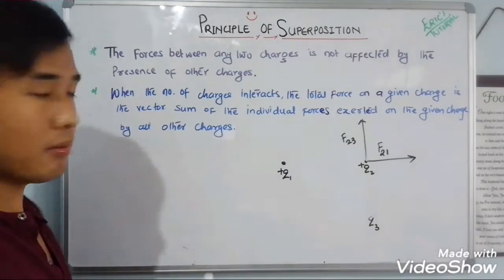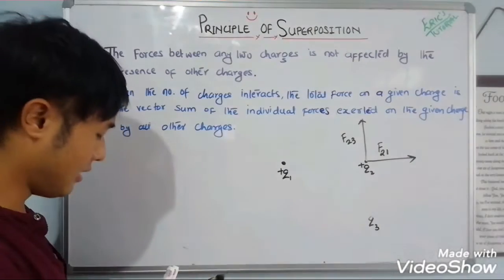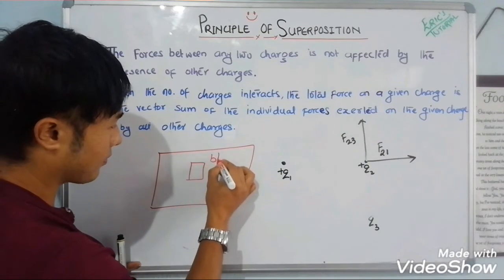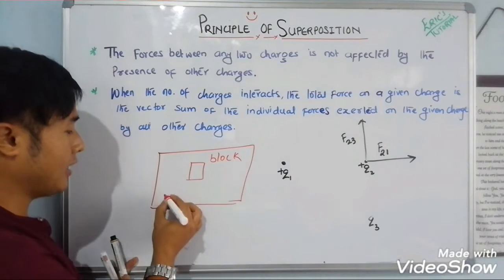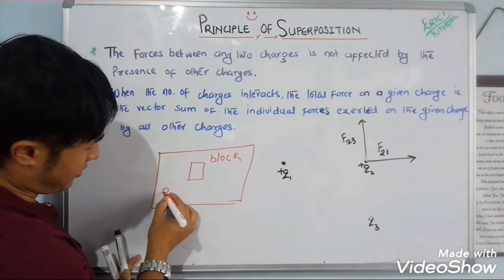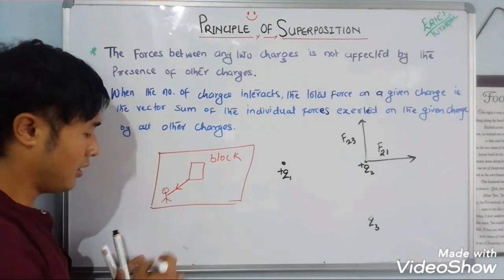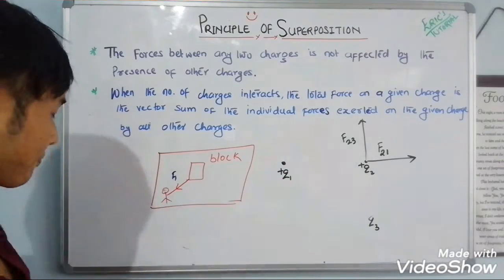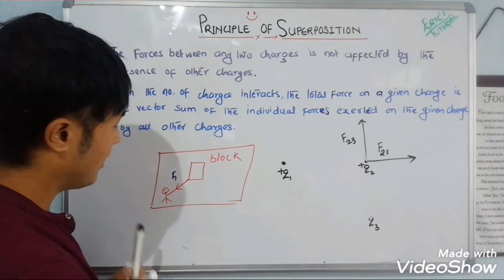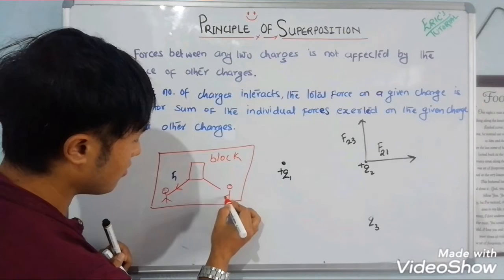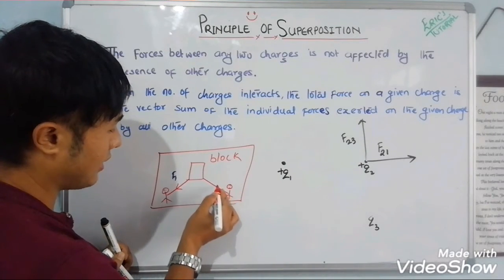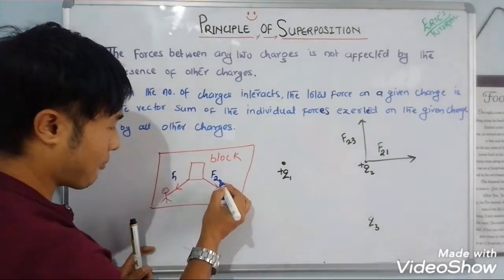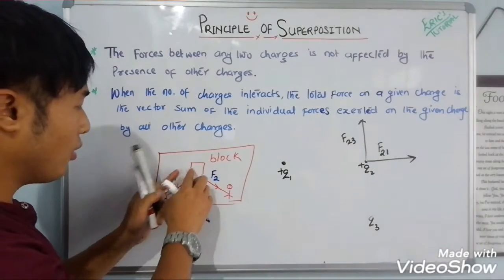To understand this with an easy example: suppose there is a block, and I am pulling that block in one direction with force F1. After some time, my friend also pulls the block, applying force F2 in another direction. The total net force on the block is the combination of F1 and F2.